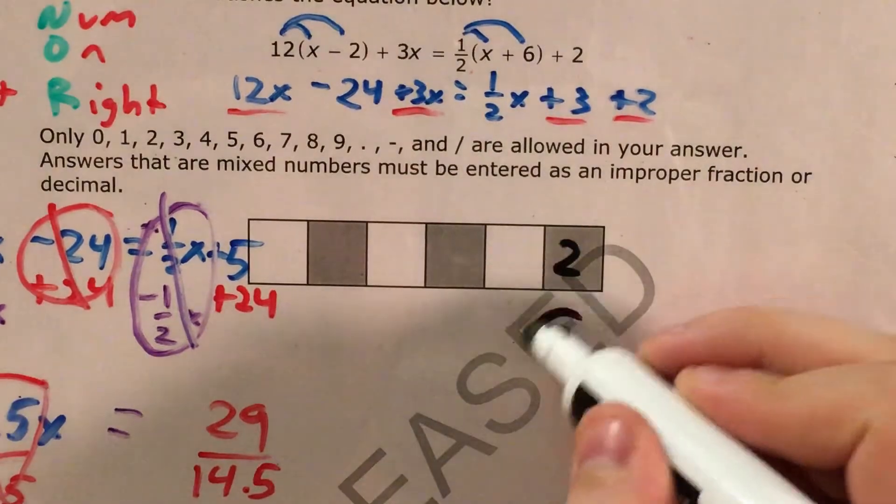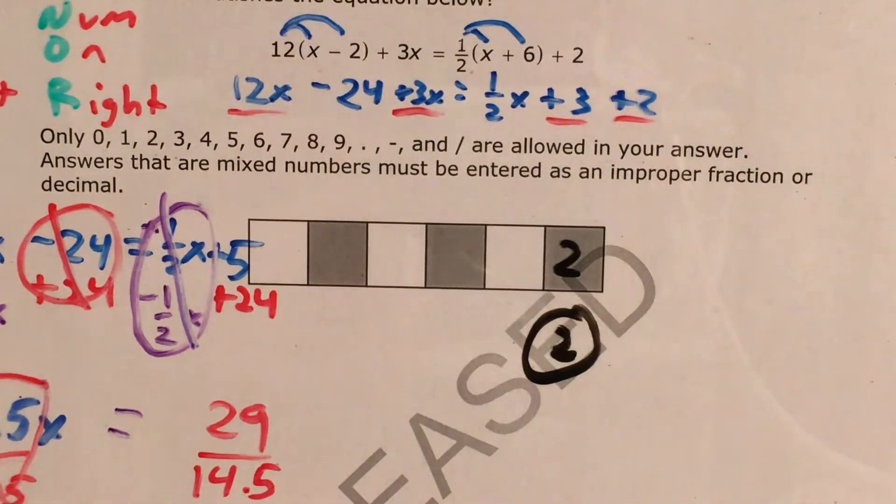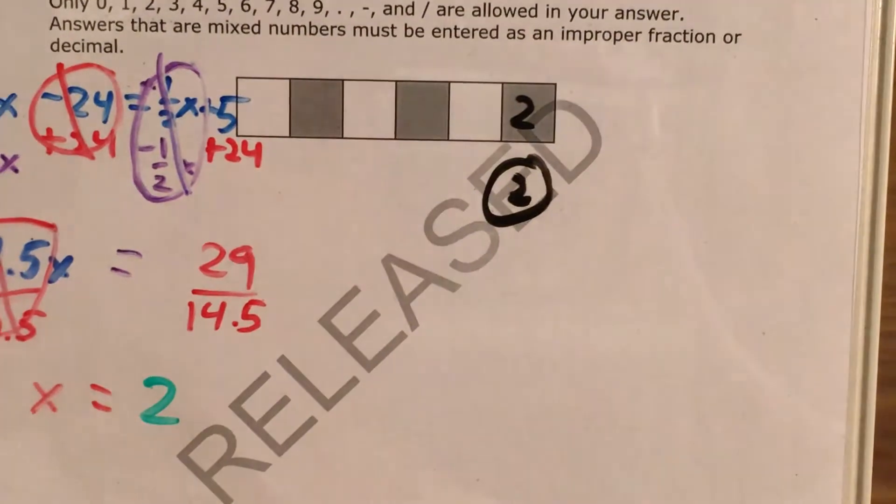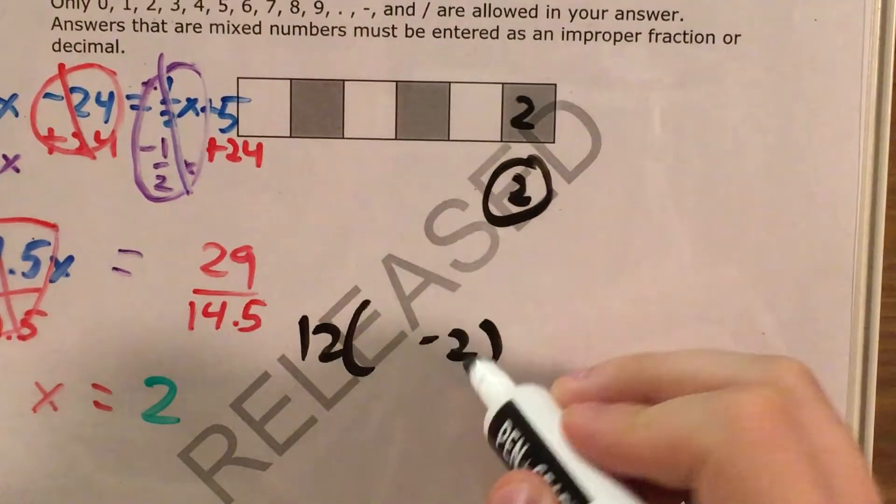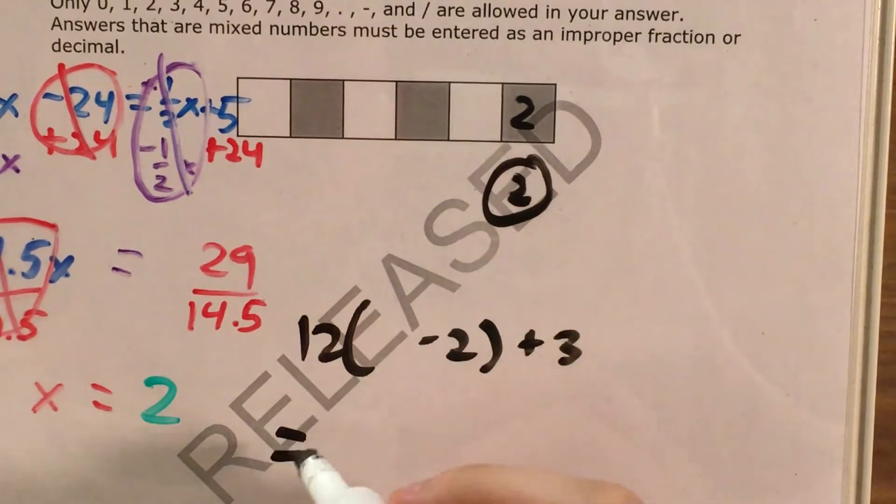So I know that the value of x equals 2. I can go ahead and plug it in here, find my 2 bubble and bubble that in. Now at this point I want to do one more thing. I want to look back at the original equation and actually check my answer.